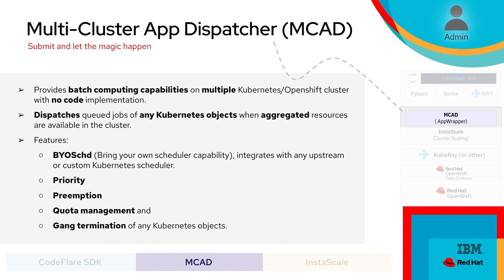Notable features of MCAD include support for bring-your-own-scheduler — the upstream community has many scheduler plugins. It provides standard features like priority, preemption, and hierarchical quota management at the framework cluster level. Last but not least, it provides fault tolerance. Failures in the cloud are inevitable — there could be hardware failures or user code issues. MCAD is able to retract the entire framework cluster to restart it or to submit the next queued cluster, increasing cluster utilization.